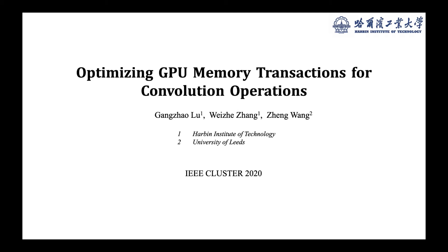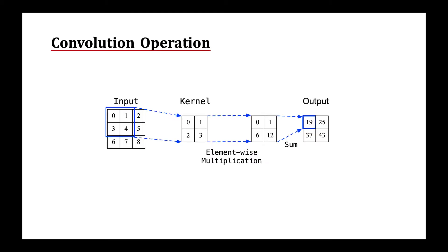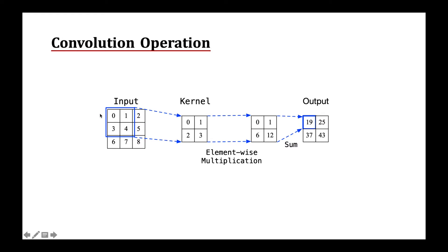Let me briefly introduce the operation of a simple 2D convolution. As can be seen from the figure, we have a 3x3 input and a 2x2 kernel. We slide the kernel over the input to perform an element-wise multiplication with the part of the input where the kernel is currently located, and then sum the result to generate one output element. As we slide the kernel along the width dimension, a row of output elements will be generated. As we slide the kernel along the height dimension, a column of output elements will be generated.